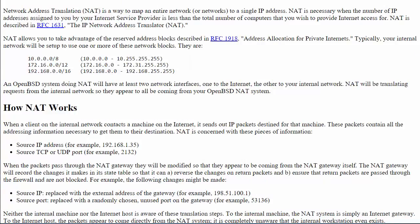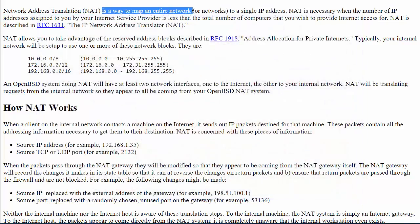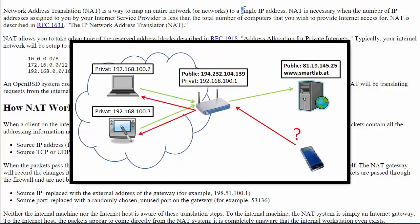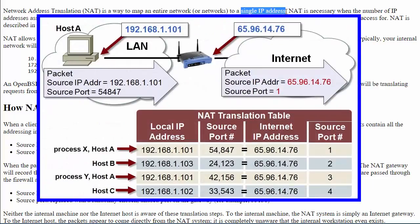We're going to do a discussion on NAT, Network Address Translation. Network Address Translation is fundamental to most home routers, small business routers, even in large enterprises. Basically it's a way to map an entire network of computers that have been given private IP addresses to a single public IP address. There are other variations of NAT that allow you to use a pool of public IP addresses and still map to a whole bunch of private IP addresses. NAT has really extended the life of IP version 4, so that even in 2016 we're still using IP version 4.